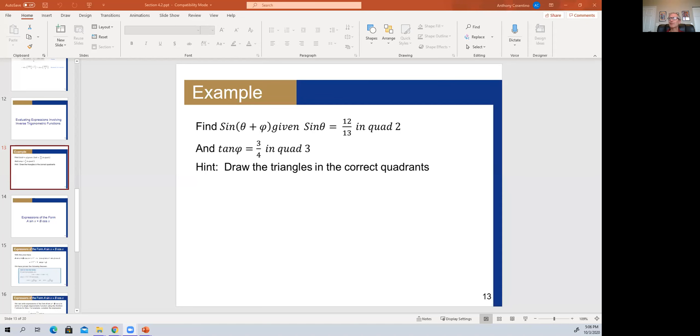And so here's what we have. We want to find sine of theta plus phi and you're given two things: the value of sine of theta in a certain quadrant and tangent of phi in a certain quadrant. And so the strategy here is first of all draw these using the unit circle right triangle approach to see what you have.